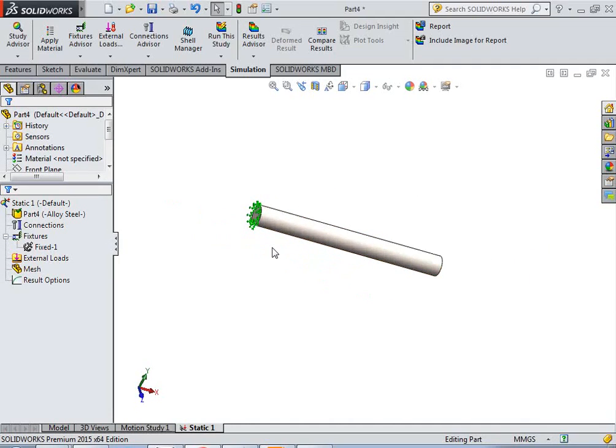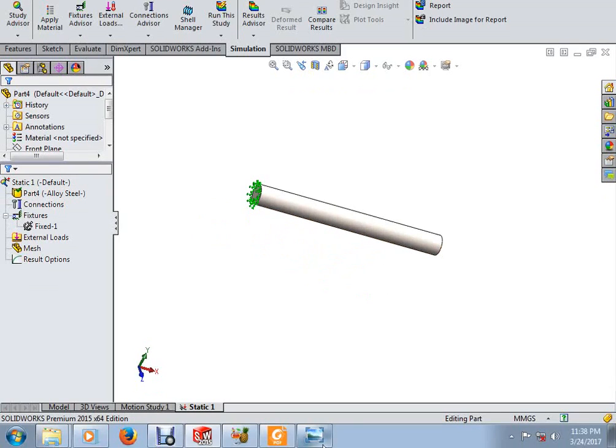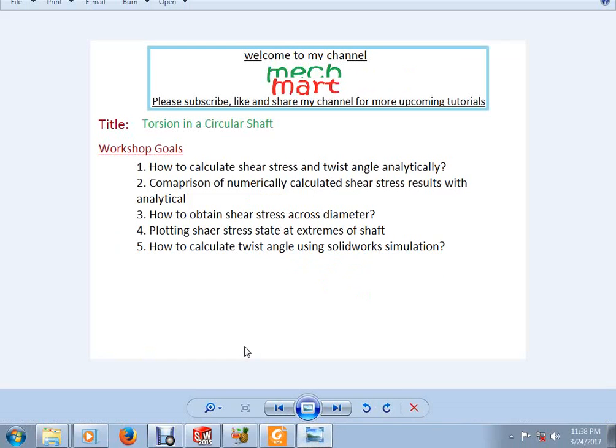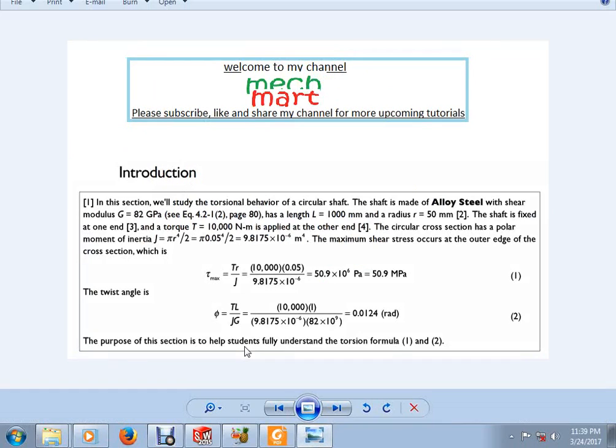So, before going, moving forward, we will go through some theory. In this section, we will study torsional behavior of the circular shaft. The shaft is made of alloy steel with shear modulus G equals 82 GPa, length is 1000 mm and radius is 50 millimeter. The shaft is fixed at one end and the torque of 10,000 Newton-meter is applied at the other end.